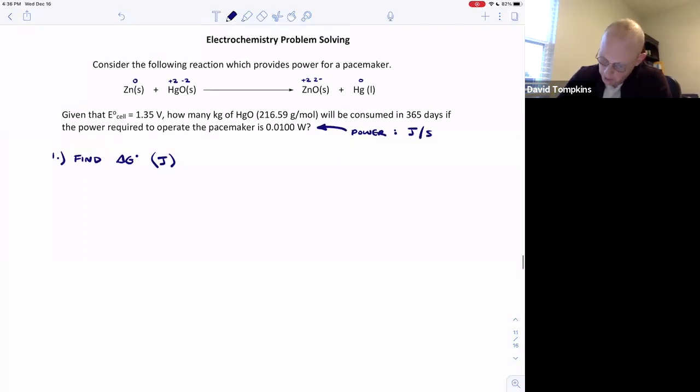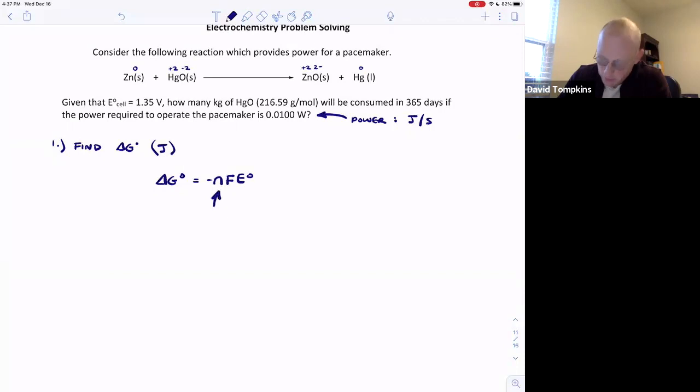First, I'm going to find the standard free energy change. We know that delta G standard is equal to the negative moles of electrons transferred, multiplied by Faraday's constant, multiplied by E standard. The only unknown currently is the number of moles of electrons. Since zinc is going from zero to two plus, or mercury is going from two to zero, n is equal to two for this reaction.